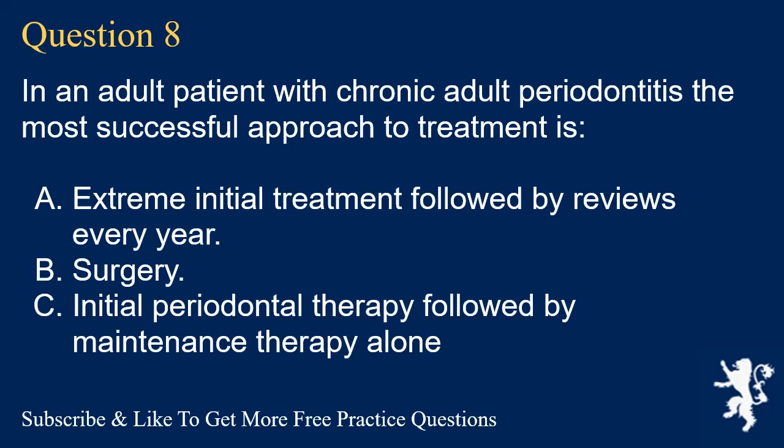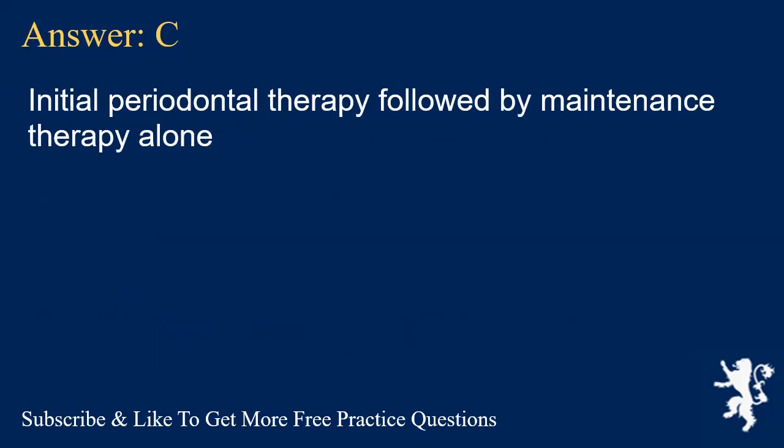Question 8. In an adult patient with chronic adult periodontitis, the most successful approach to treatment is? A. Extreme initial treatment followed by reviews every year. B. Surgery. C. Initial periodontal therapy followed by maintenance therapy alone. Answer: C. Initial periodontal therapy followed by maintenance therapy alone.